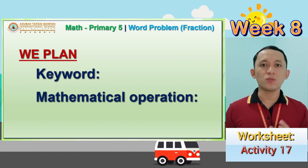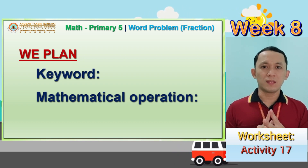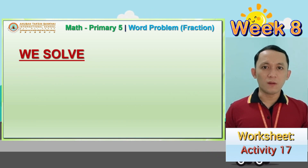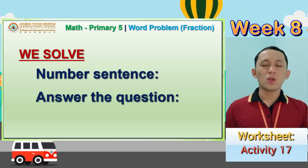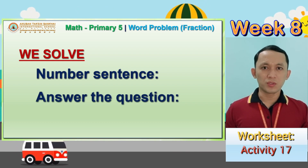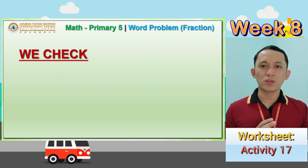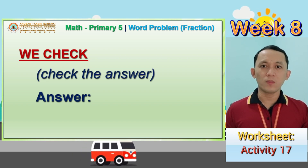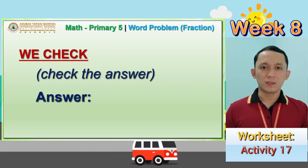The keyword helps us identify the operation to use. We have four mathematical operations: addition, subtraction, multiplication, and division. The third stage is 'We Solve,' where we write our number sentence and show our solution. And the last stage is 'We Check,' where we verify whether our answer is right or wrong — though most of the time we will skip that and write our answer directly.